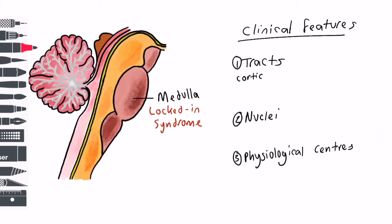The two main tracts affected in locked-in syndrome are the corticospinal and corticobulbar tracts. Damage to the corticospinal tract in the pons results in quadriplegia. Damage to the corticobulbar tract results in anarthria which is an inability to speak. As a result, sufferers are often heavily dependent on their carers.